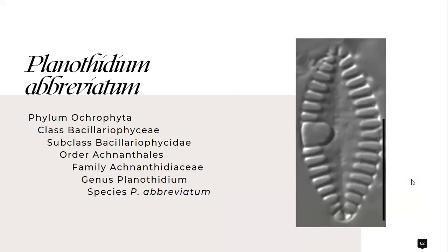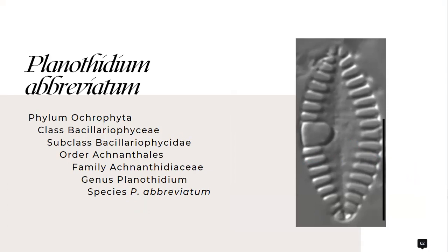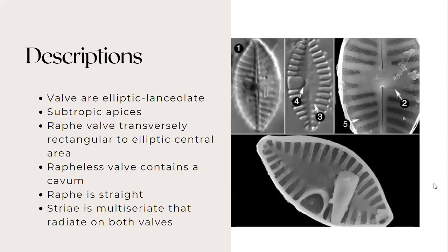For the next species, I will discuss them. So for the first species, it's called Planothidium abbreviatum from the family Achnanthidiaceae. So for its descriptions, its valves are elliptic lanceolate and it has subrostrate apices.